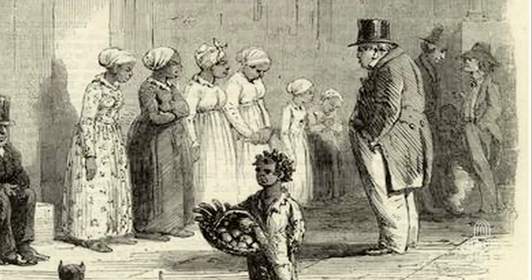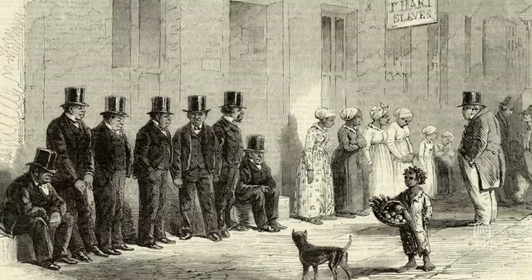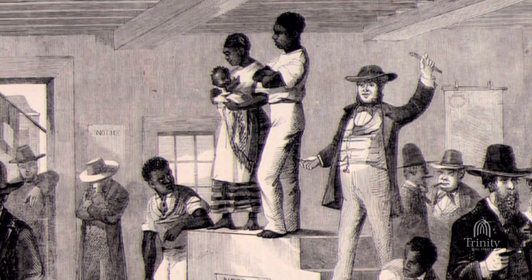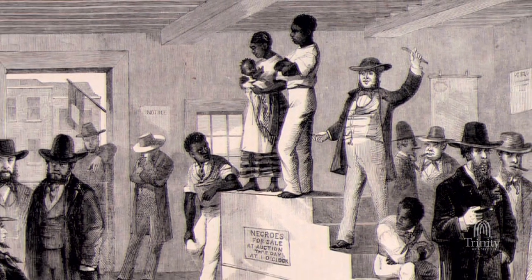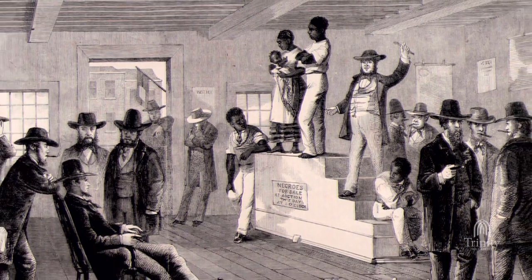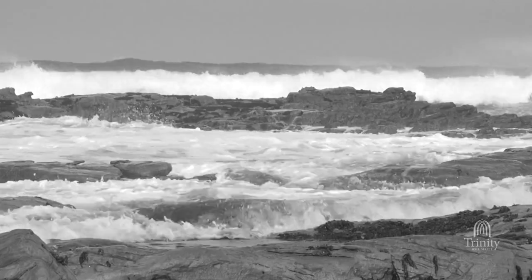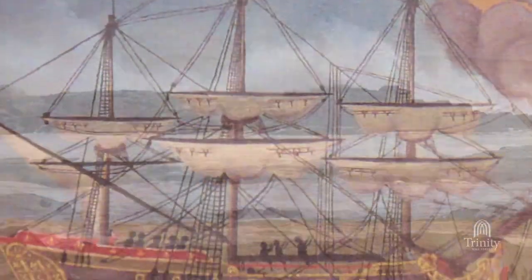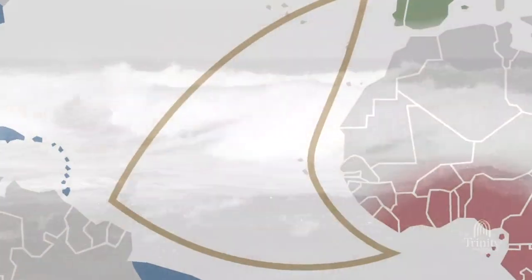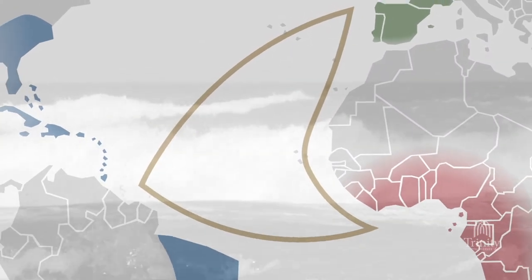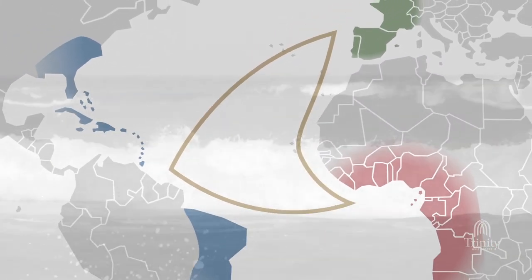Everybody assumed that slavery was really a part of the order. The Atlantic Ocean crashes into the west coast of Africa. Along this coastline, an estimated 12 million captured Africans began their forced journey to the Americas. Almost 2 million would die before completing the Middle Passage. The survivors would arrive in a new world, enslaved.